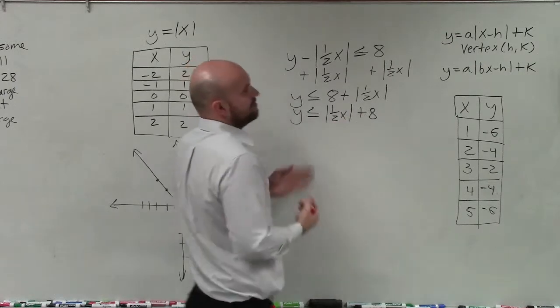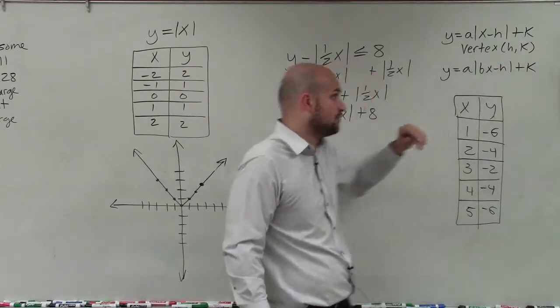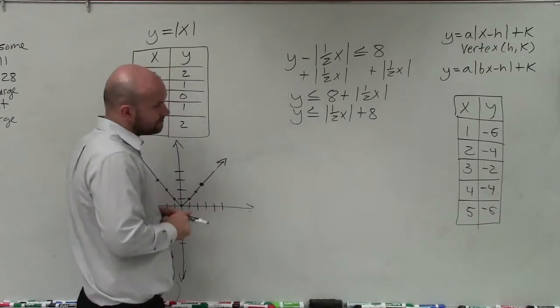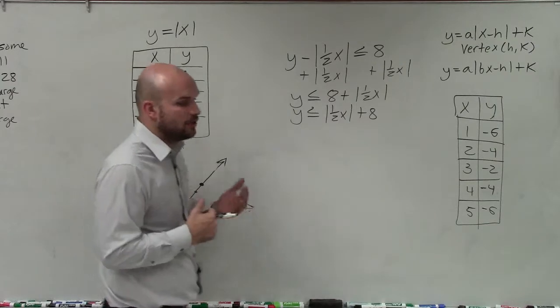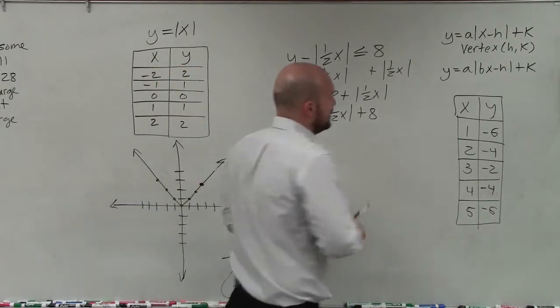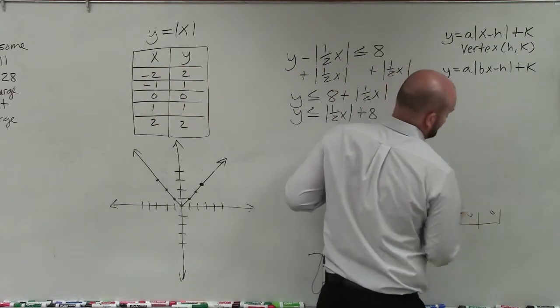We could also rewrite that as absolute value of 1½x plus 8, and I think that's preferred form because you can see that's now in your transformation form. Now we want to determine are we going to have a dashed or a solid line?